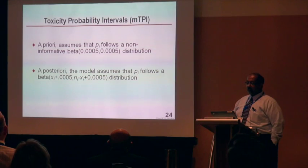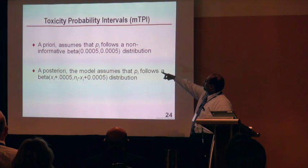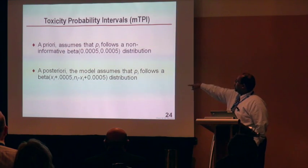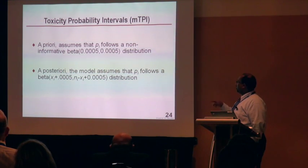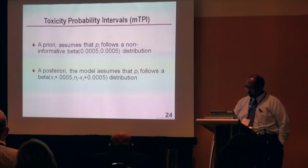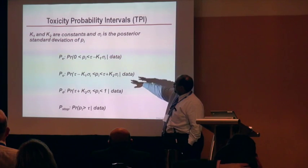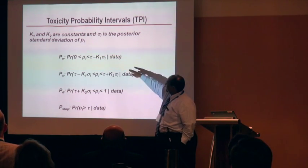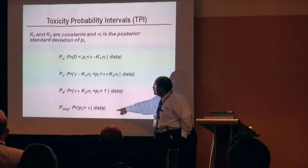In the original TPI method, we used nearly improper priors. The posterior assumes that pi follows a beta distribution with parameters X_i plus 0.005, and N_i minus X_i plus the prior parameter. The decision rules require defining K1 and K2. After defining those, you choose the dose that maximizes three probabilities — P_E (escalate), P_S (stay), and P_D (de-escalate) — given that you haven't stopped for too much toxicity. Whichever probability is highest drives the decision.